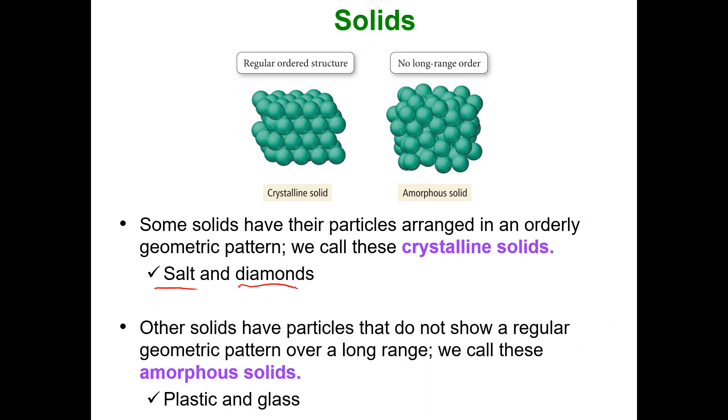The amorphous solids, because of their irregular pattern, there's a little more flexibility, but there's still a solid. So you can think of plastic bottles. You can think of glass. If you go to the old churches, the window panes, the stained glass over time begins to get thicker in the bottom of the window pane than the top because they're slowly flowing. Another example is rubber. You take a rubber band, you can stretch it.